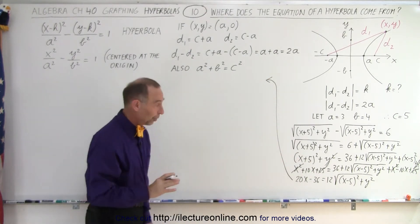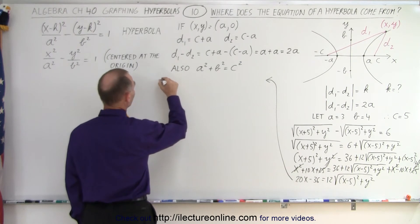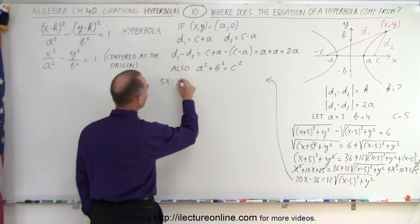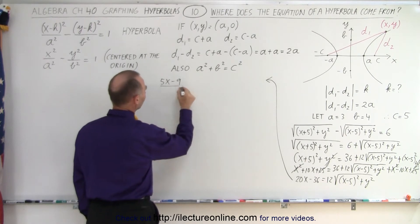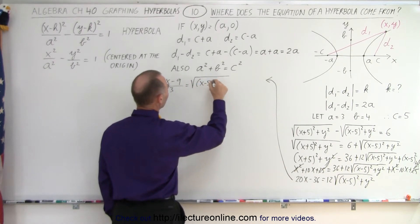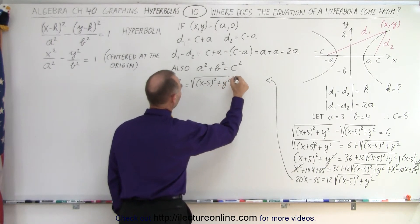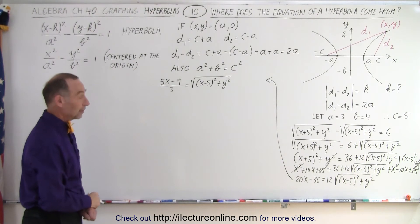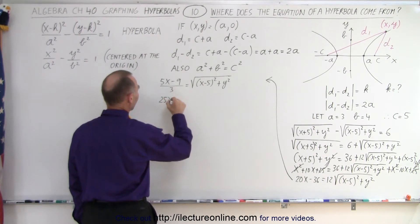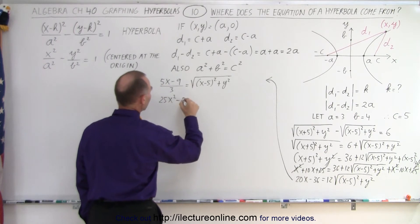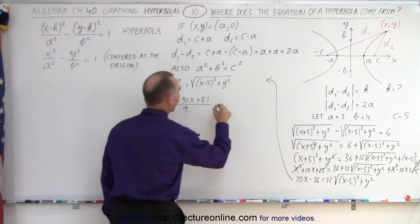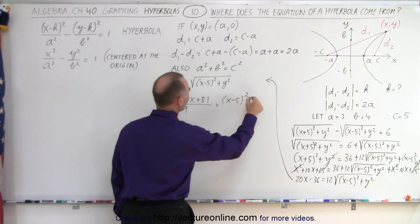We divide both sides by 4 and then by 3. When we do that, we end up with 5x minus 9 — since 36 divided by 4 is 9 — divided by 3, equals the square root of x minus 5 squared plus y squared. Now we're ready to square both sides again. When we square both sides, on the left side we end up with 25x squared minus 90x plus 81, all divided by 9, and that equals x minus 5 quantity squared plus y squared.